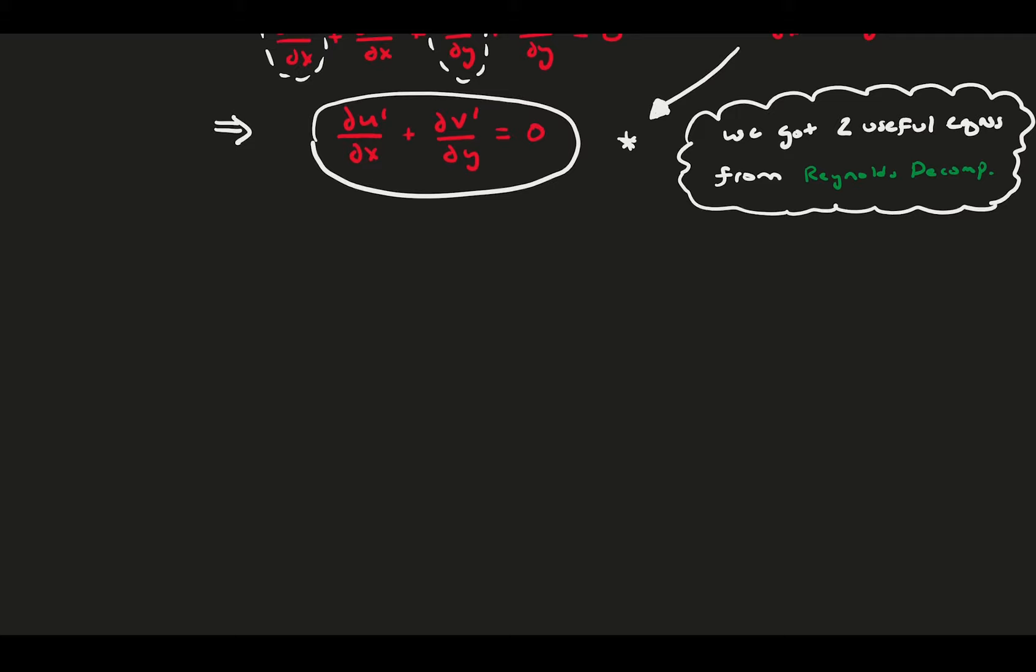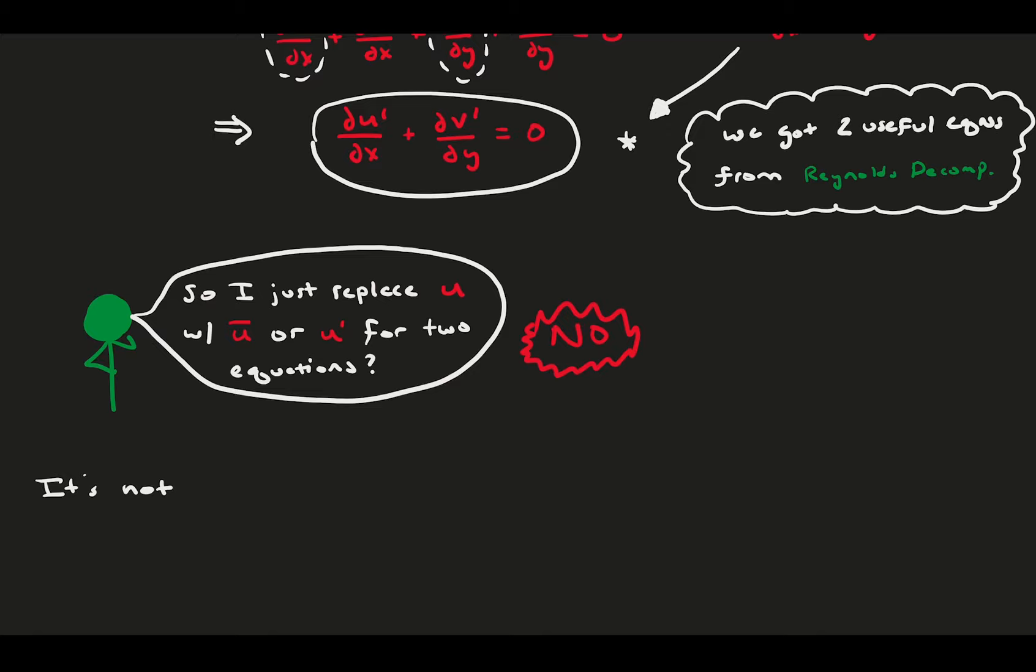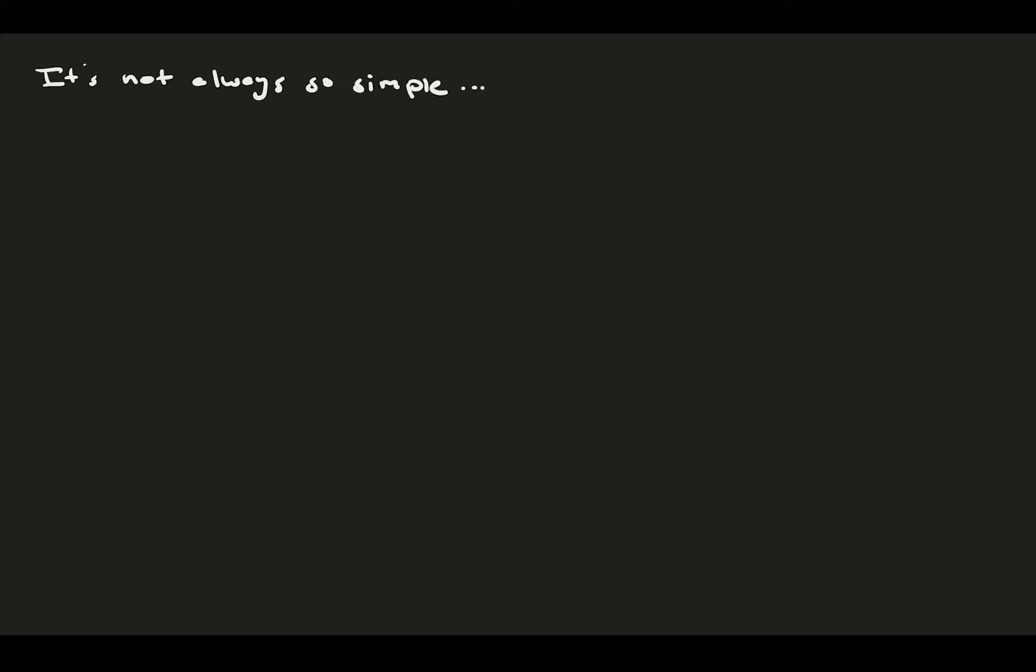Now, it seems like all we did was change u to either u prime and u bar, and v to either v prime or v bar, and that gave us two equations. But it's not always this simple and straightforward, and unfortunately it's not as easy as replacing variables. That's because nonlinear terms, or products of two functions, cause issues with the averaging. Remember before, we said the average of the product of two fluctuation signals is not necessarily zero.